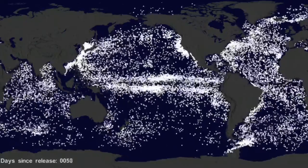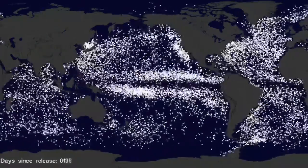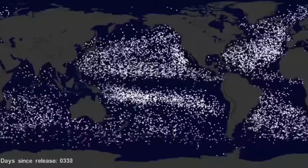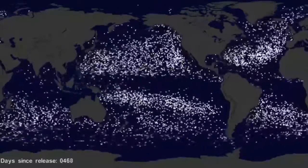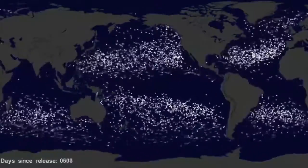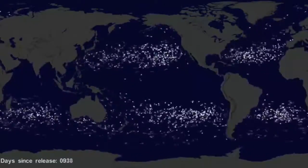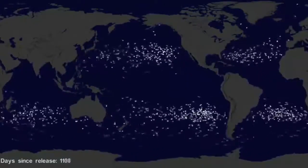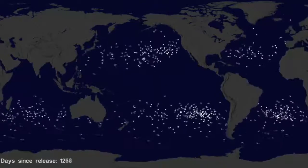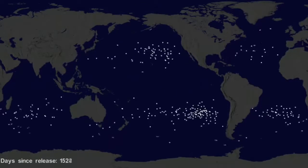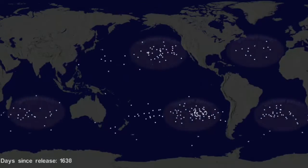If we let all the buoys go at the same time, we can observe buoy migration patterns. The number of buoys decreases because some buoys don't last as long as others. The buoys migrate to five known gyres, also called ocean garbage patches.